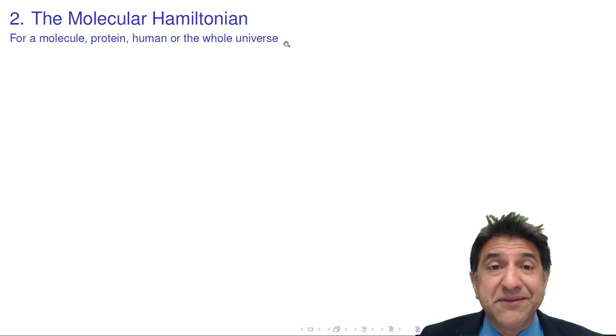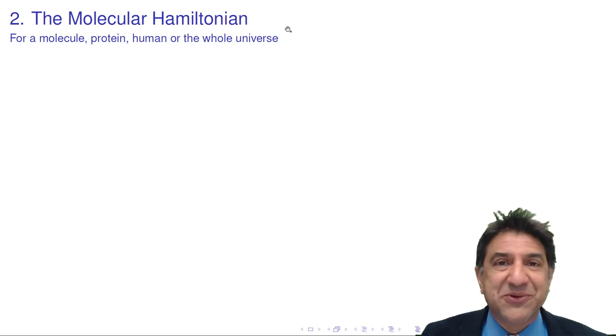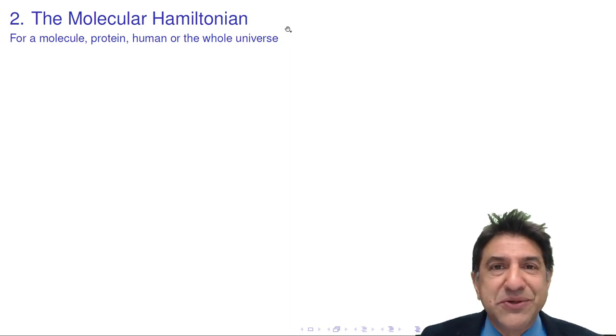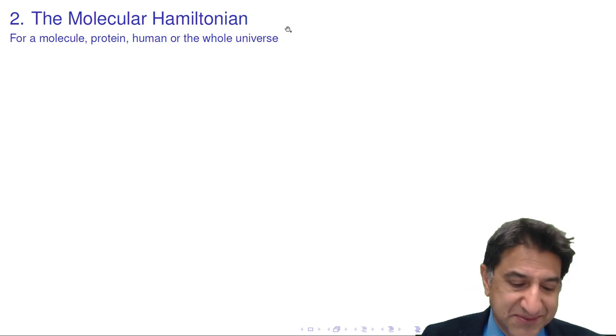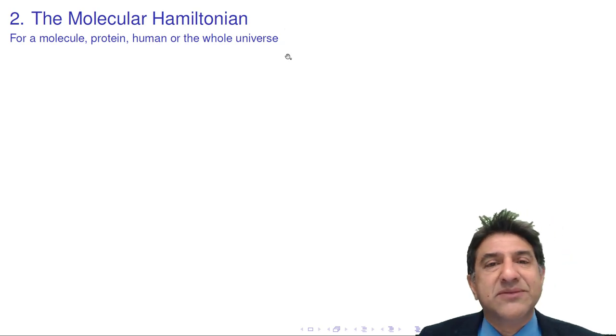We can write that down. We can write down the Hamiltonian for any one of those things. It looks the same for all of those things. So this is the beauty of the Schrodinger equation. Of course it gets more complicated when the systems get bigger, but in principle the Hamiltonian looks the same.